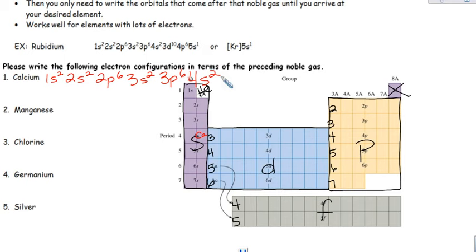Now we did say that they get a little longer as you have more and more electrons. There is yet another shortcut. Now this shortcut is optional. You'll see it. So you'll want to understand it. But if they ask you on a test or quiz, write the electron configuration for calcium. And you write that, A plus full credit.